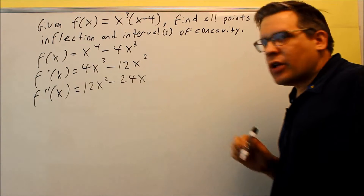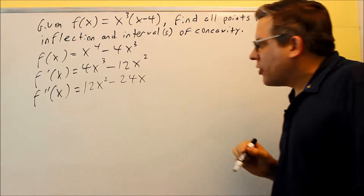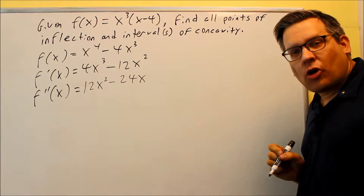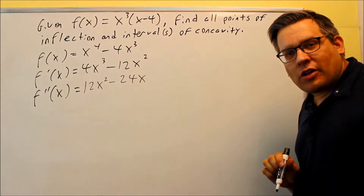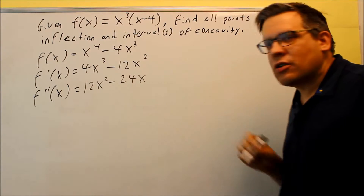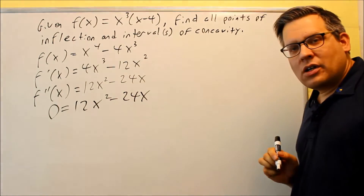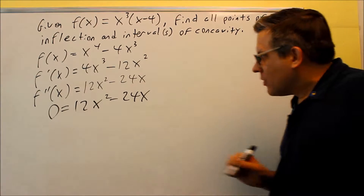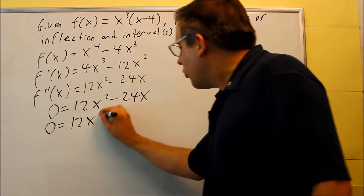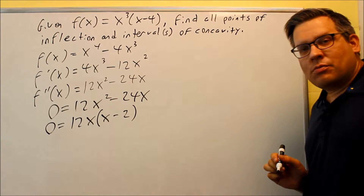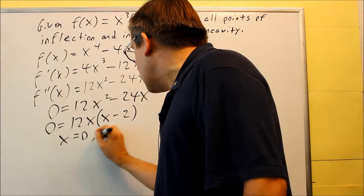One way to find possible inflection points is if the second derivative is undefined somewhere. Because we have a polynomial, it's always going to be defined for every value of x. So we move on to the second way: take the second derivative and set it equal to 0. We have 0 equals 12x squared minus 24x. Solving by factoring, we take out a common factor of 12x, which gives us x minus 2. Setting each factor equal to 0, we get x equals 0 and x equals 2.